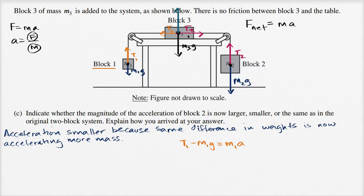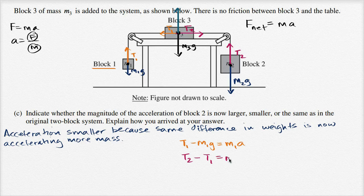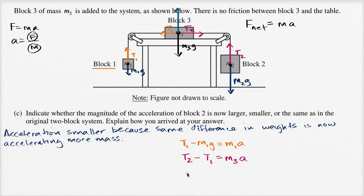For block three, accelerating to the right: T2 minus T1 equals M3 times a. Here we're accelerating to the right, for block one we're accelerating up, and for block two we're accelerating down — but the magnitudes are all the same, denoted lowercase a. Then for block two, the net forces give us M2g minus T2 equals M2 times a.